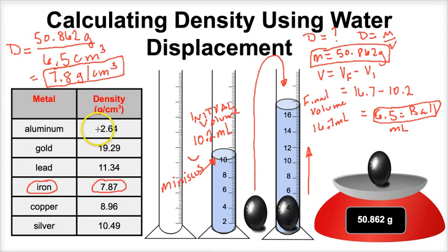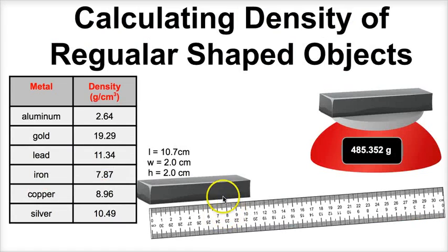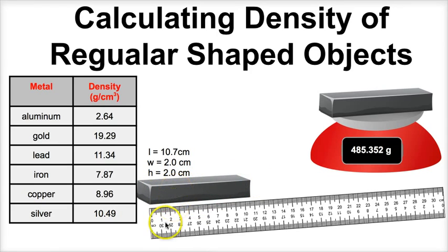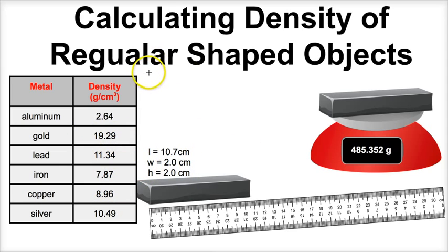What if we have a regular shaped object like a cube? Let's figure out how we can work problems out with that. We have this little rectangular box that is some sort of metal, and we want to figure out the density and what substance it is. We have to figure out the density by taking the mass and dividing by its volume.